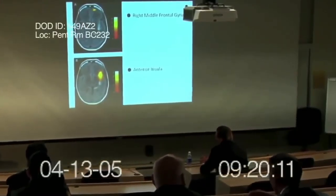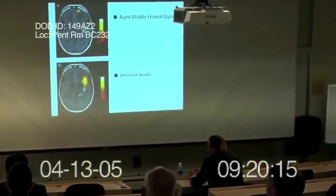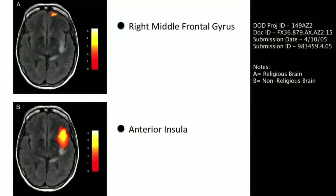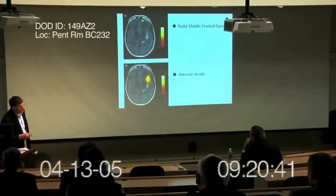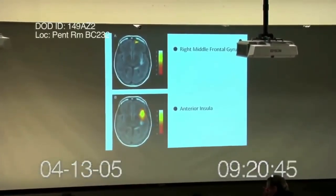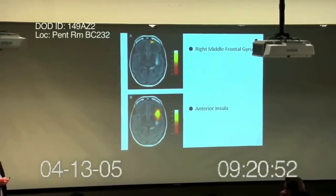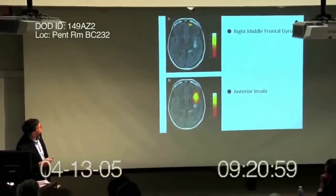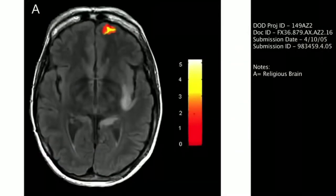We have some very remarkable data in this next slide. Here we have two brain scans — these are fMRIs. These are two different individuals with different levels of expression of VMAT2. On top is an individual who's a religious fanatic, and we've repeated this numerous times, who has high levels of VMAT2. This individual down here had low levels of the VMAT2 gene and would self-describe as not particularly religious. In each case, these individuals were read a religious text. This individual lit up the right middle frontal gyrus, shown here.